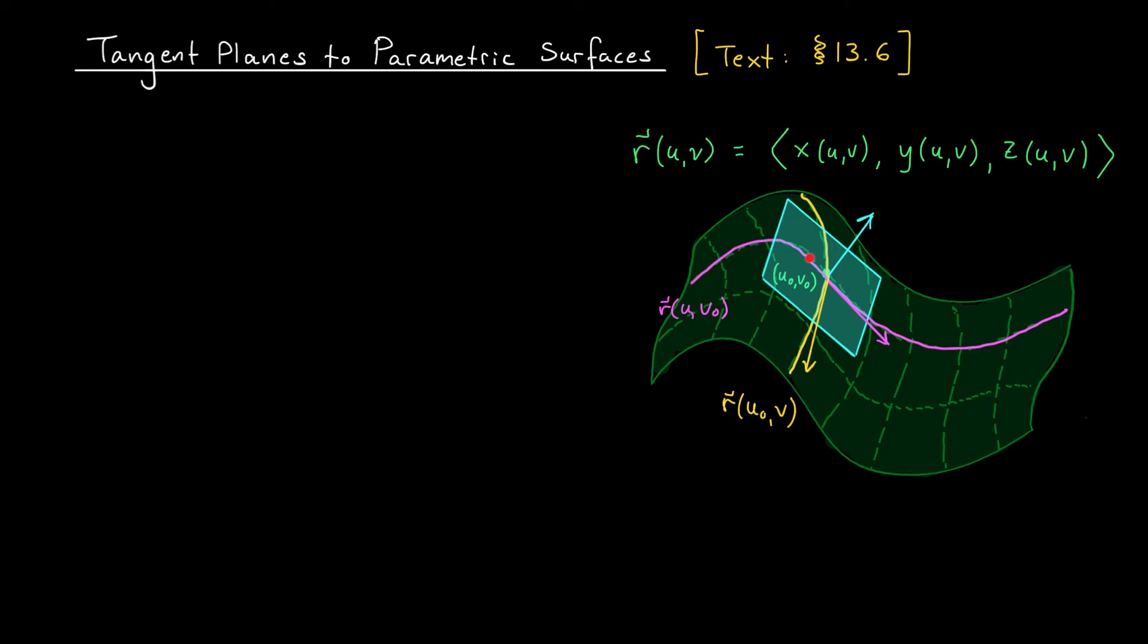This pink curve is really a parametric curve traced out by this vector function. This is a vector function of one parameter, and we know how to find the tangent vector to such a curve. We look at the derivative of our vector function. So my tangent vector at u0 v0 would be the derivative of r u v0 with respect to u evaluated at u equals u0.